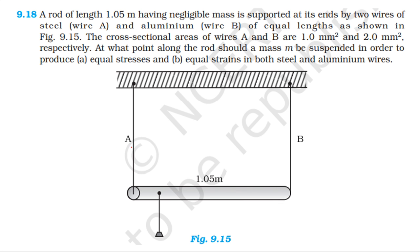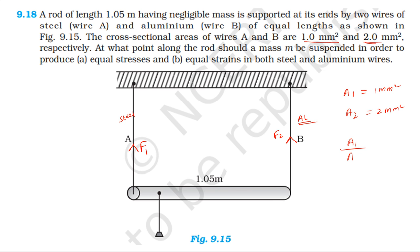In this problem, a force acts on the steel wire — let that force be F1 — and on the aluminium wire the force acting is F2. The area of steel wire is A1, which equals 1 mm², and the area of aluminium wire is A2, which equals 2 mm².